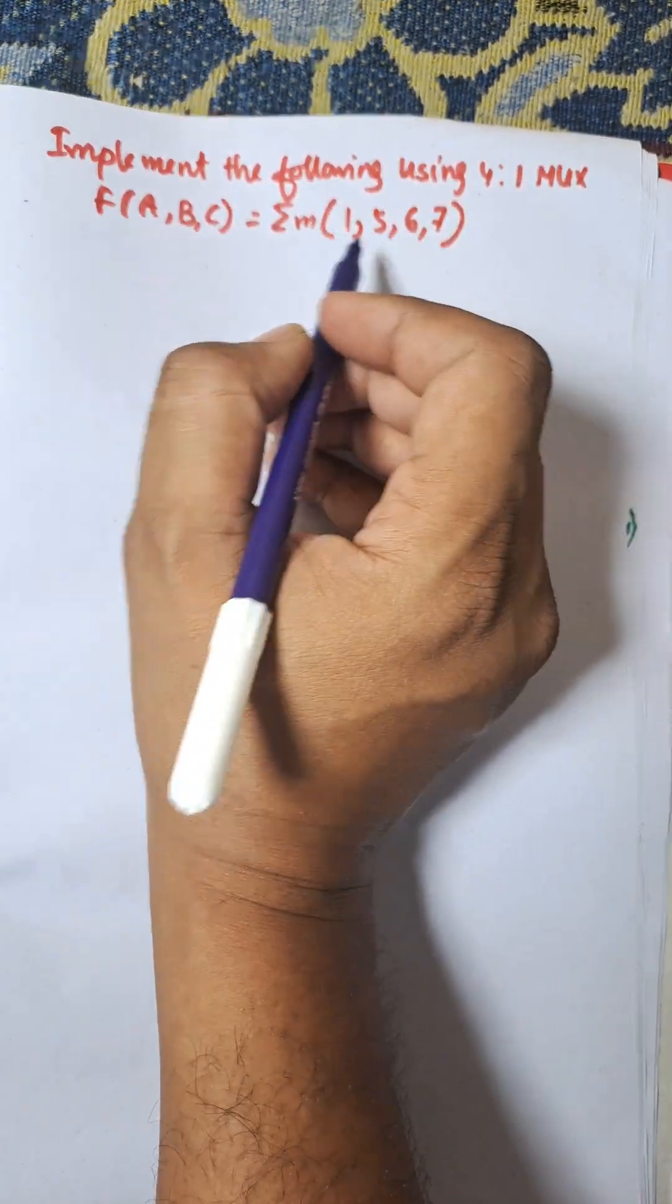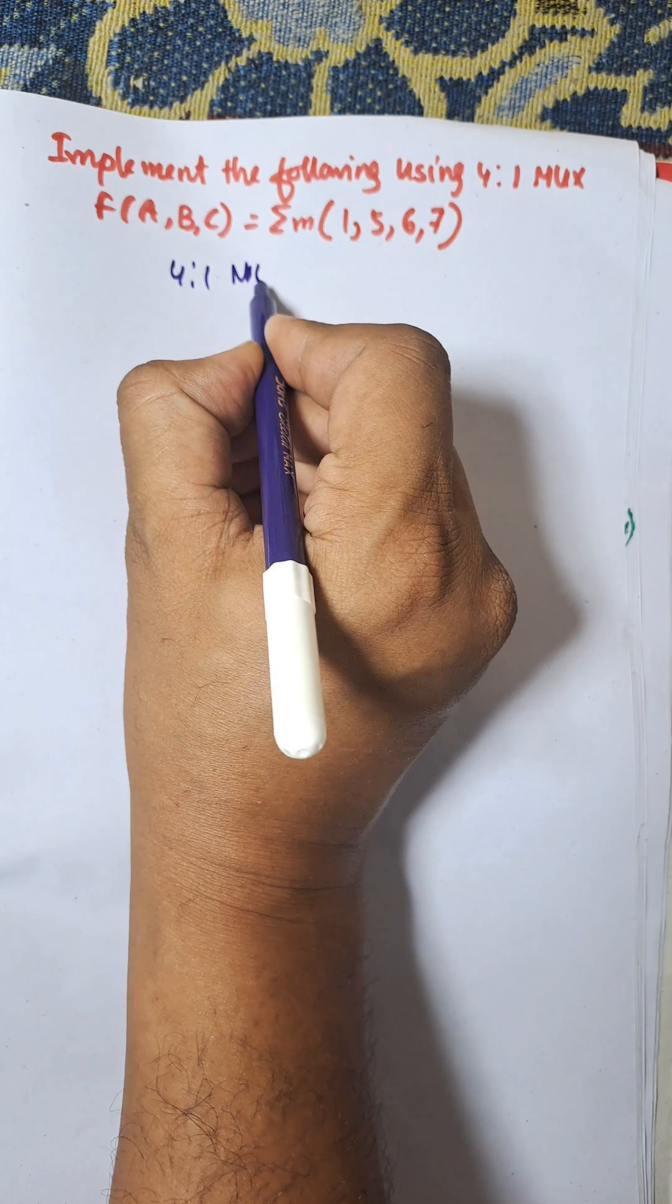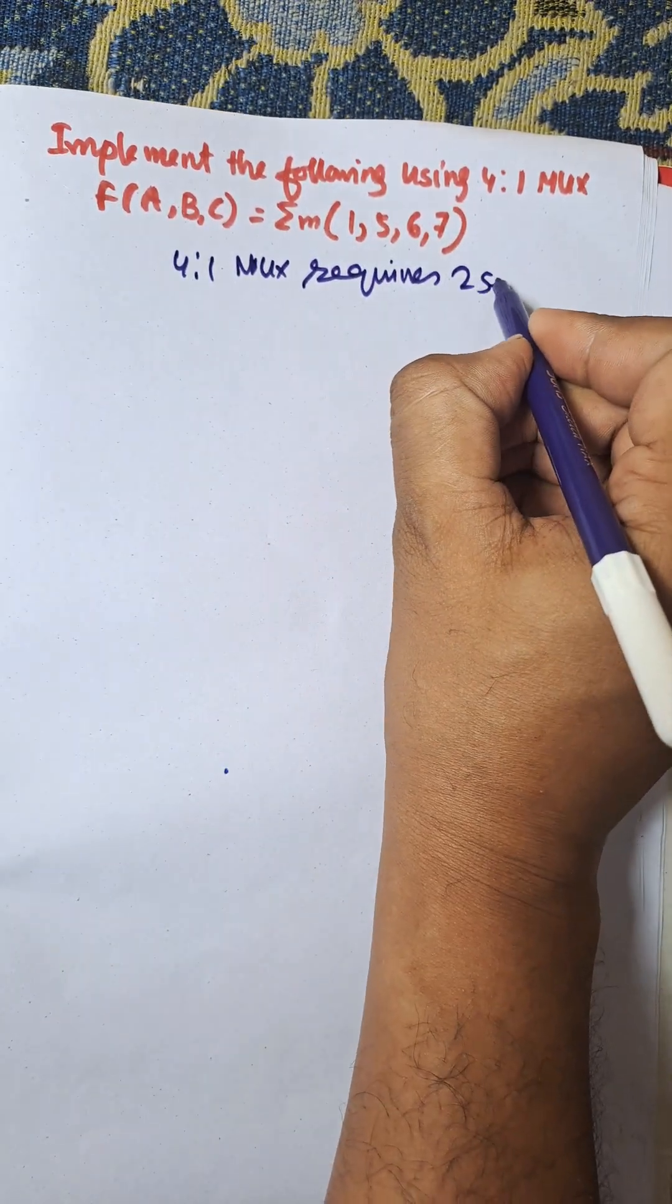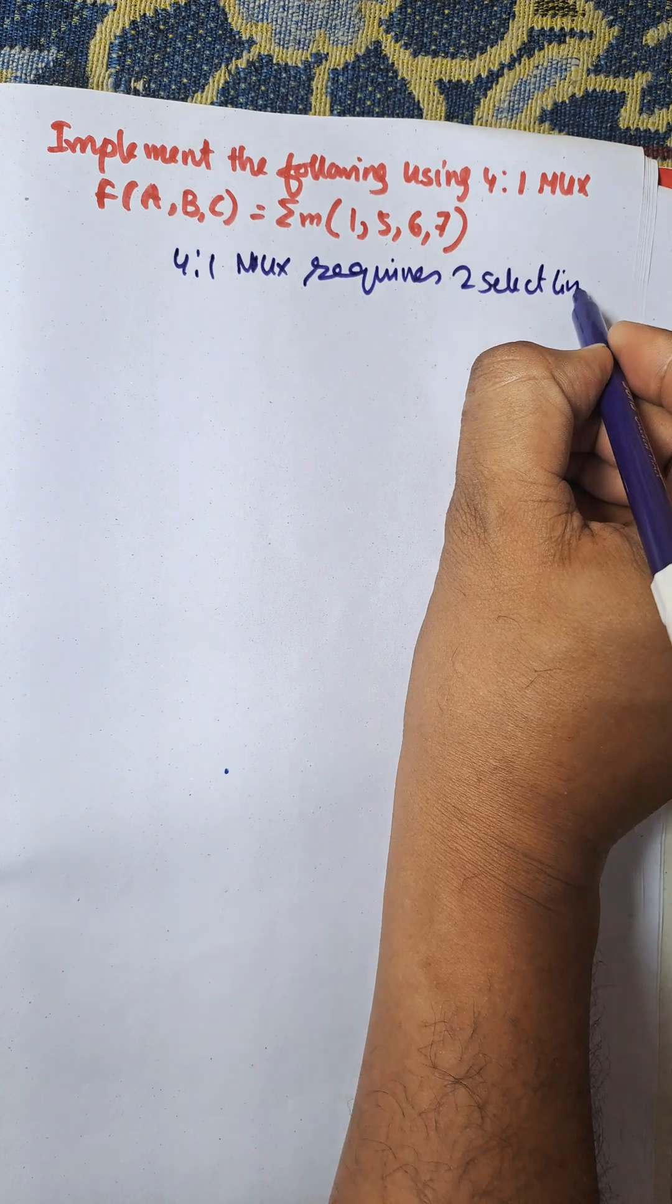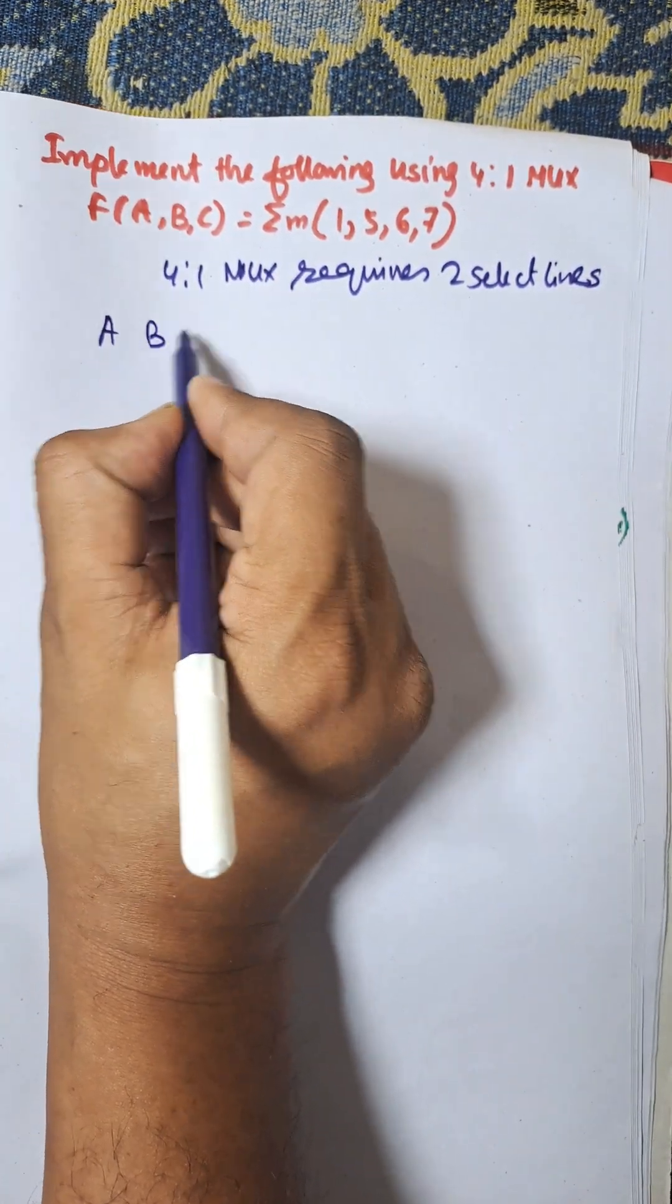Following using 4-to-1 MUX, and here 4-to-1 MUX requires two select lines. This is the first point. Now here there are three variables A, B, C.